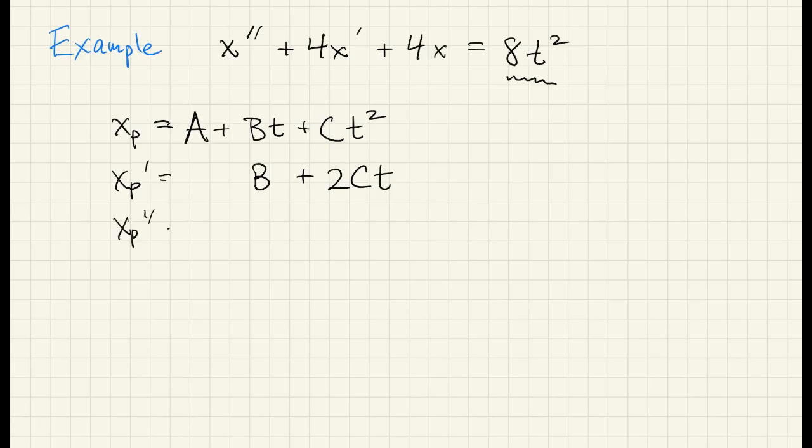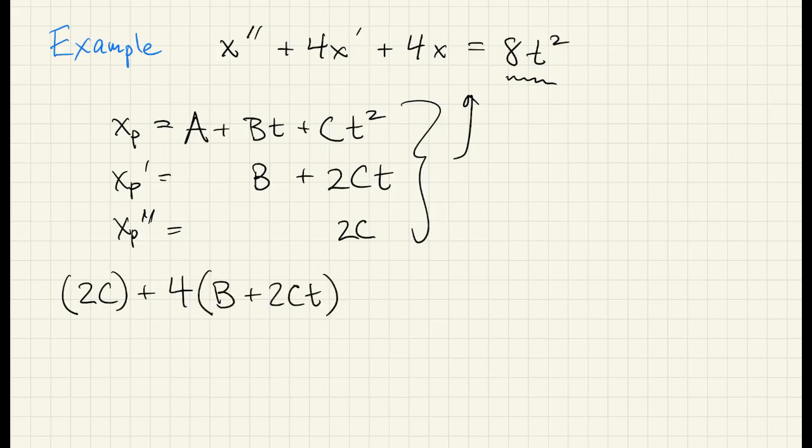Then we take the derivatives of xp, and we put all that and plug it into the original equation. We get our x double prime plus 4 times x prime plus 4 times x equals 8t squared.